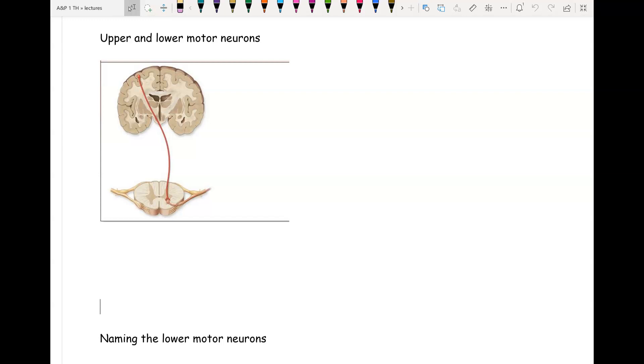Now we're ready to look at the structure of the autonomic nervous system. We're going to begin by comparing it to what you already know about somatic. So this picture is somatic. This is from chapter 14, you already know this picture.